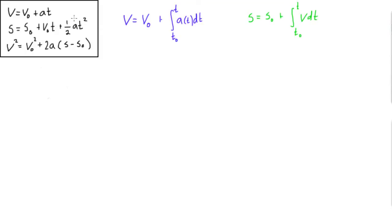In this video we're going to be learning how to derive the kinematic equations with constant acceleration. In the last video we derived the blue equation and the green equation. If you'd like to see how to get to this step, we started with acceleration as a function of time and derived formulas for velocity and position. Just go back and watch that video if you'd like, but to save time we're not going to go through that again.